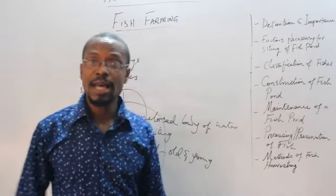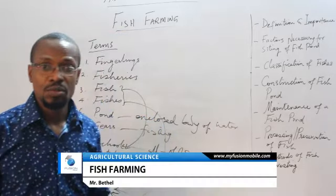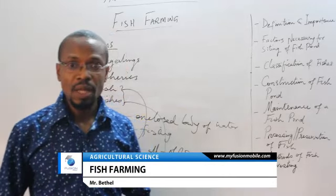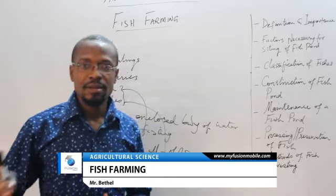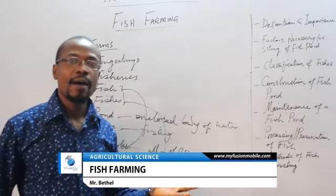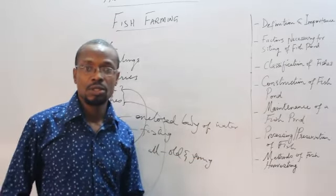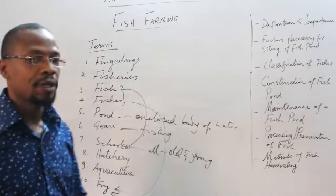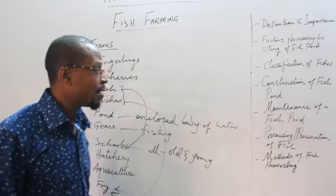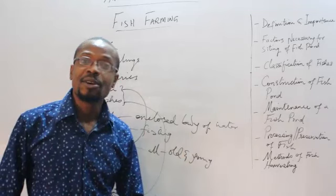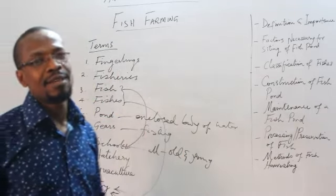Fish has also been found very useful in the medical environment. For instance, fish oil — cod liver oil, which many of us drank as little babies — helped to strengthen bones and improve our immune systems. And away from that, fish have been used in pharmaceutical industries in other ways.